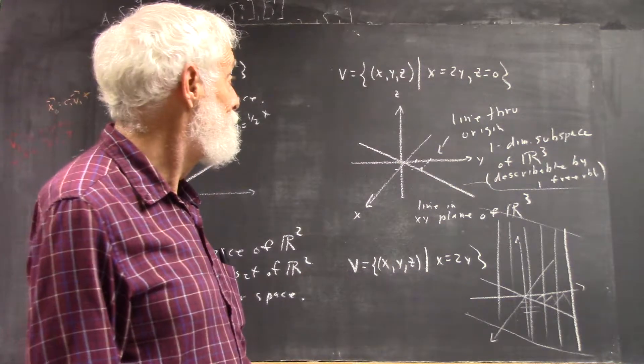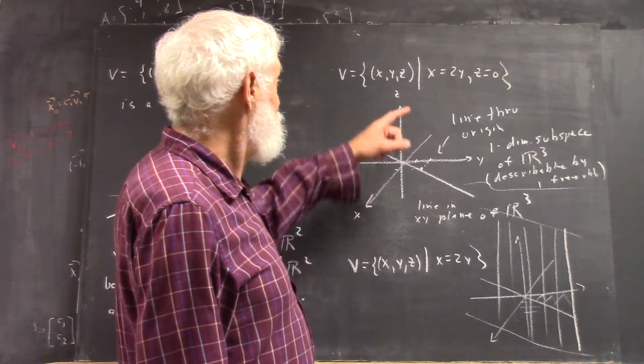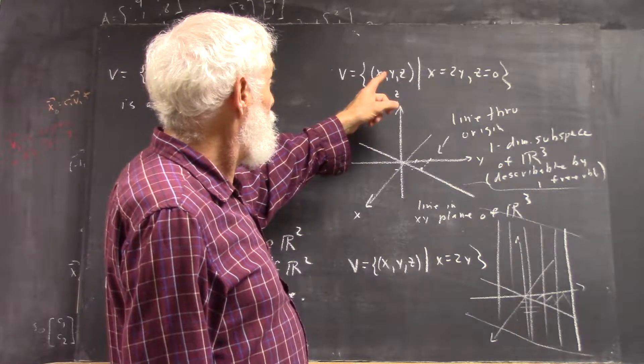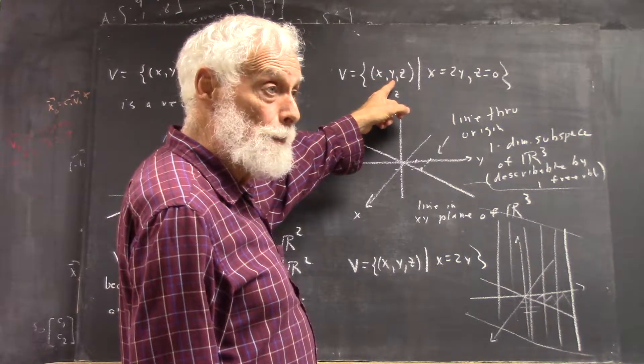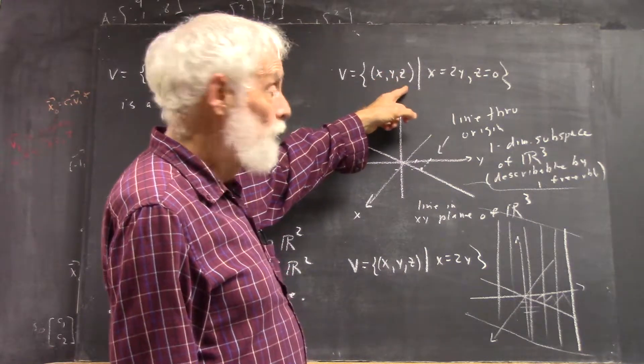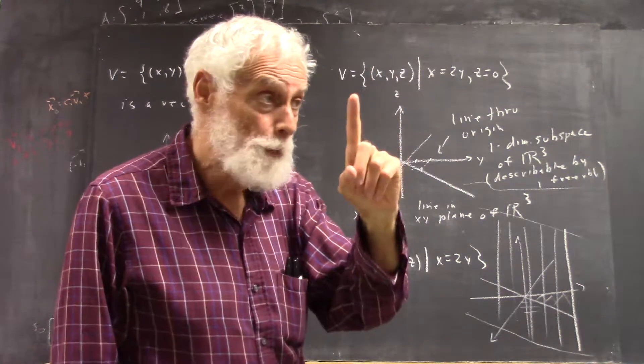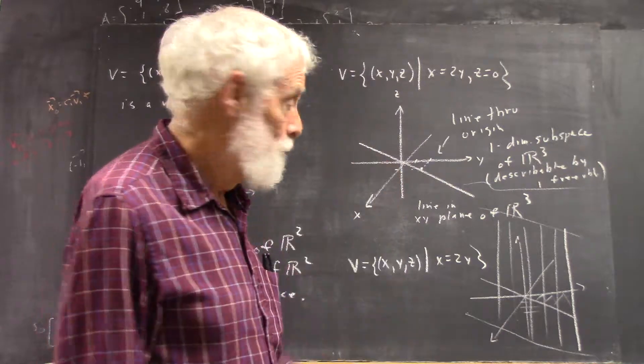In other words, my variable could be T. And then, I just call this: Y is going to be T, Z is going to be 0, and X is going to be 2T. So now I've only got one parameter, right?